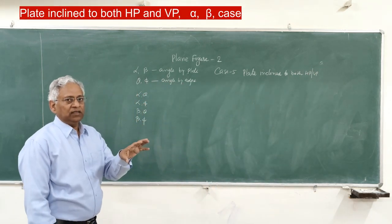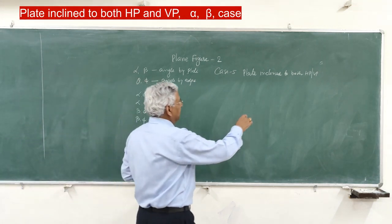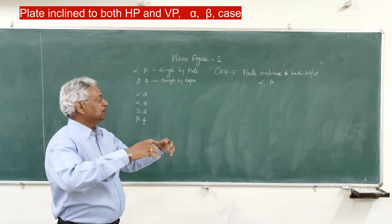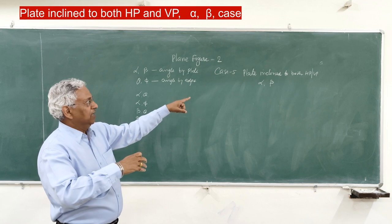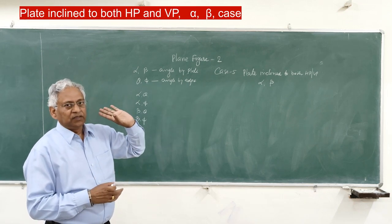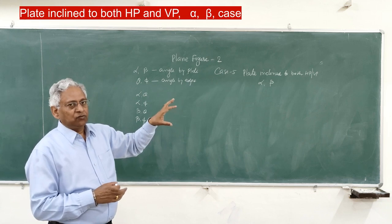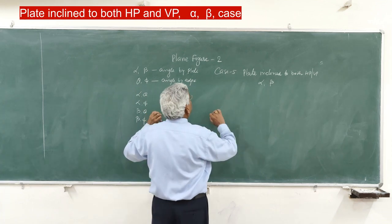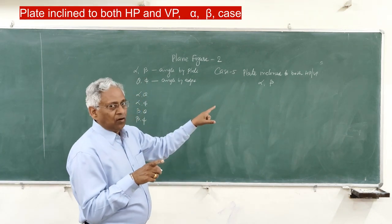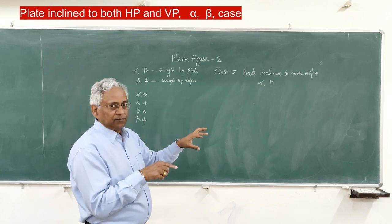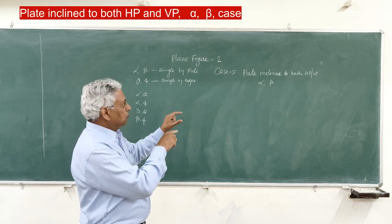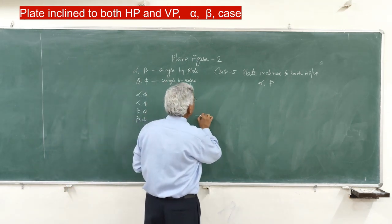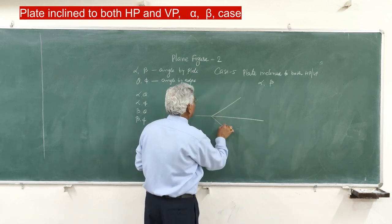That means the plate is now in a wobbling plane. Let us say the plate makes angle alpha with the horizontal plane and beta with the vertical plane. So the plate lies in the wobbling plane, which makes angle alpha with HP and beta with the vertical plane. The first step is to draw the VTH of the wobbling plane — draw VTH where alpha and beta are given. You can draw VTH either by one method or by the vertical line method, and these two methods I have explained in another session on wobbling planes. So let us say this is the VTH of a wobbling plane.